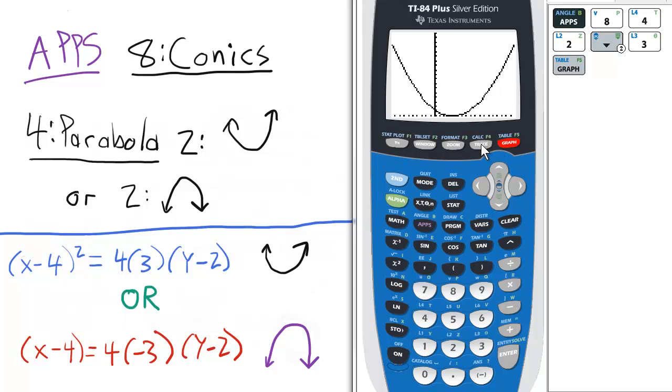Now I can trace along the parabola by pressing trace and the right arrow key to move right and left. So you can get an idea of where to trace this, very helpful for quizzes, tests, and exams.